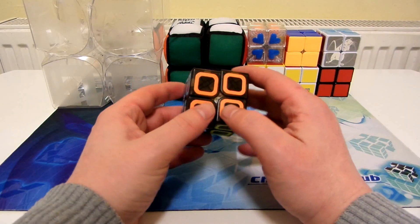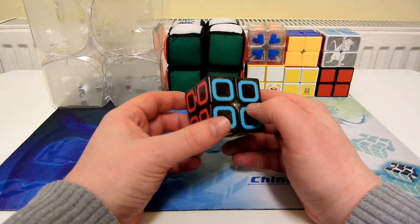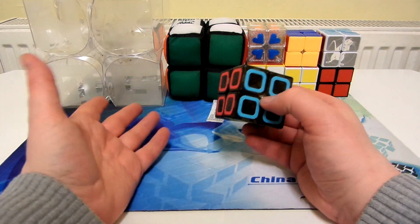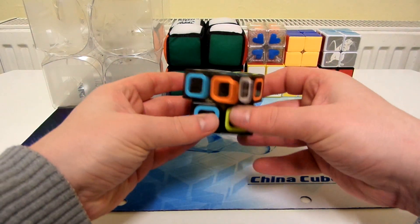And then, the last one for the 2x2s is this Qi 2x2, I think it's called a Dimension 2x2. Love the way it looks, and yeah, it's a nice puzzle to solve.